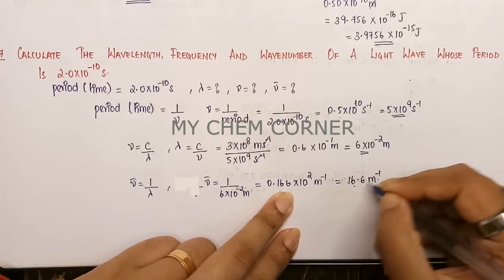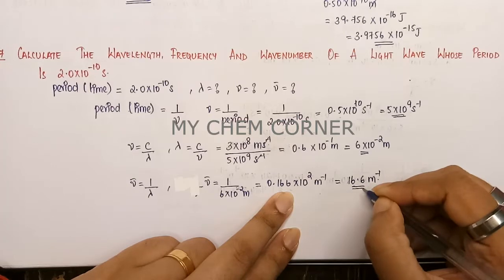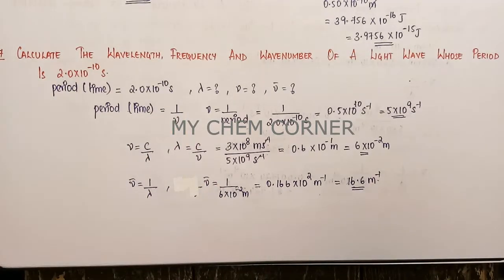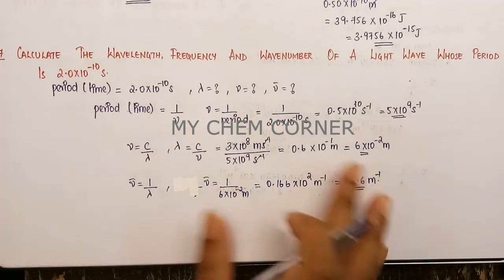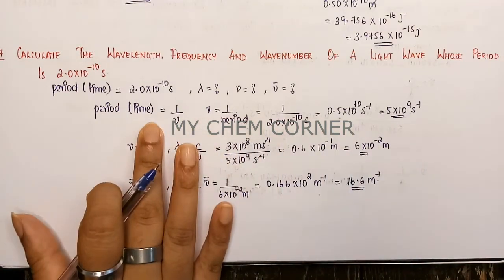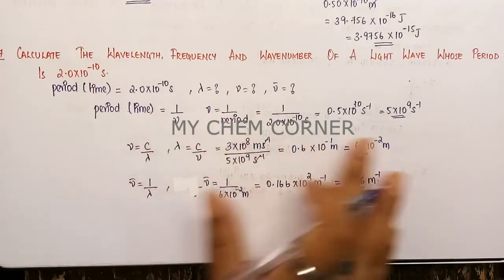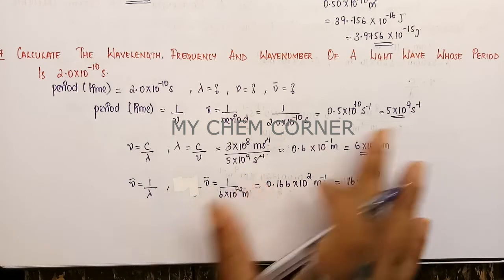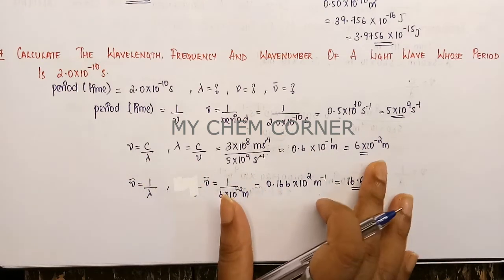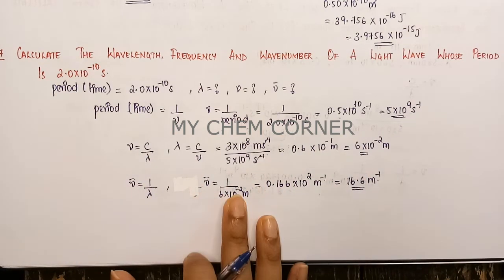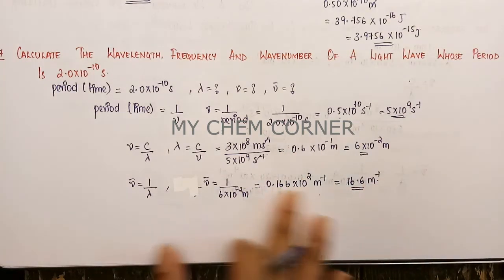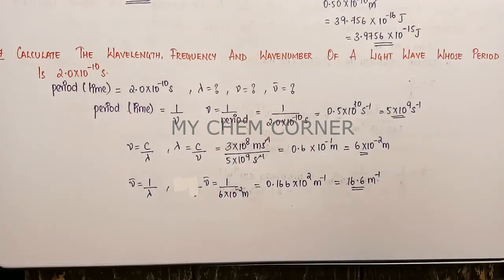So we have all three values: frequency was calculated from the period, wavelength was calculated from the frequency, and wave number was calculated from the wavelength. All three values have been found and this is how we solve such problems.